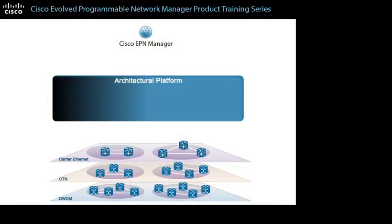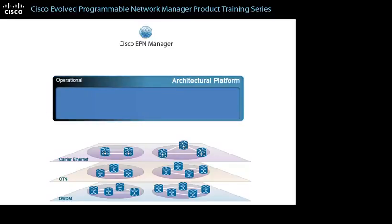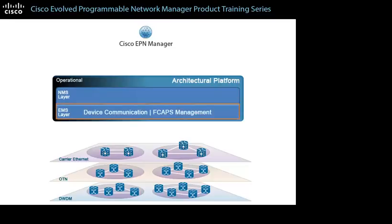The architectural platform of Cisco EPN Manager provides the common functionality and structure for device and network management activities. The operational functions on the platform include the Element Management System layer and the Network Management System layer. The EMS layer supports device communication and FCAPS management, and the NMS layer supports the network provisioning and assurance functions.